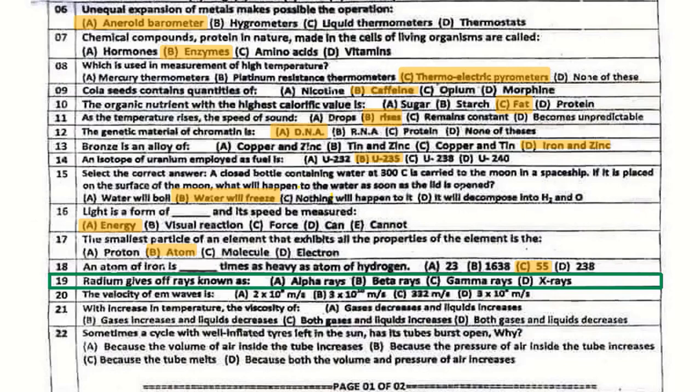Question number 19: Radium gives off rays known as what? The correct answer is alpha rays.